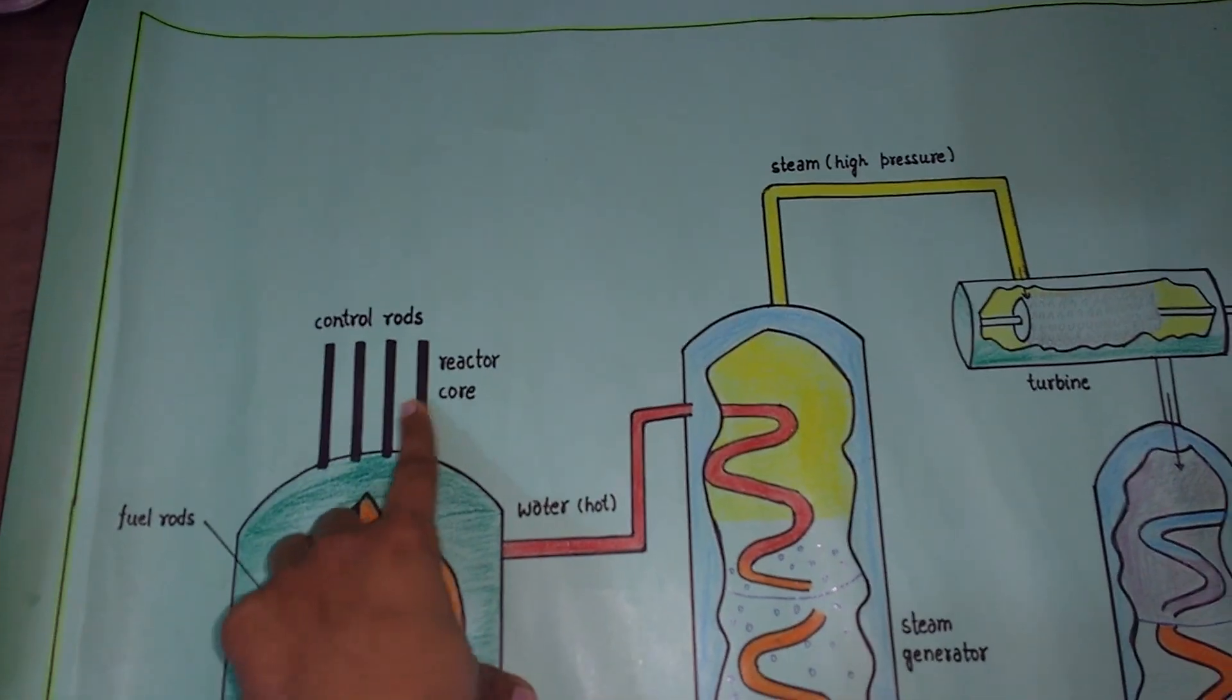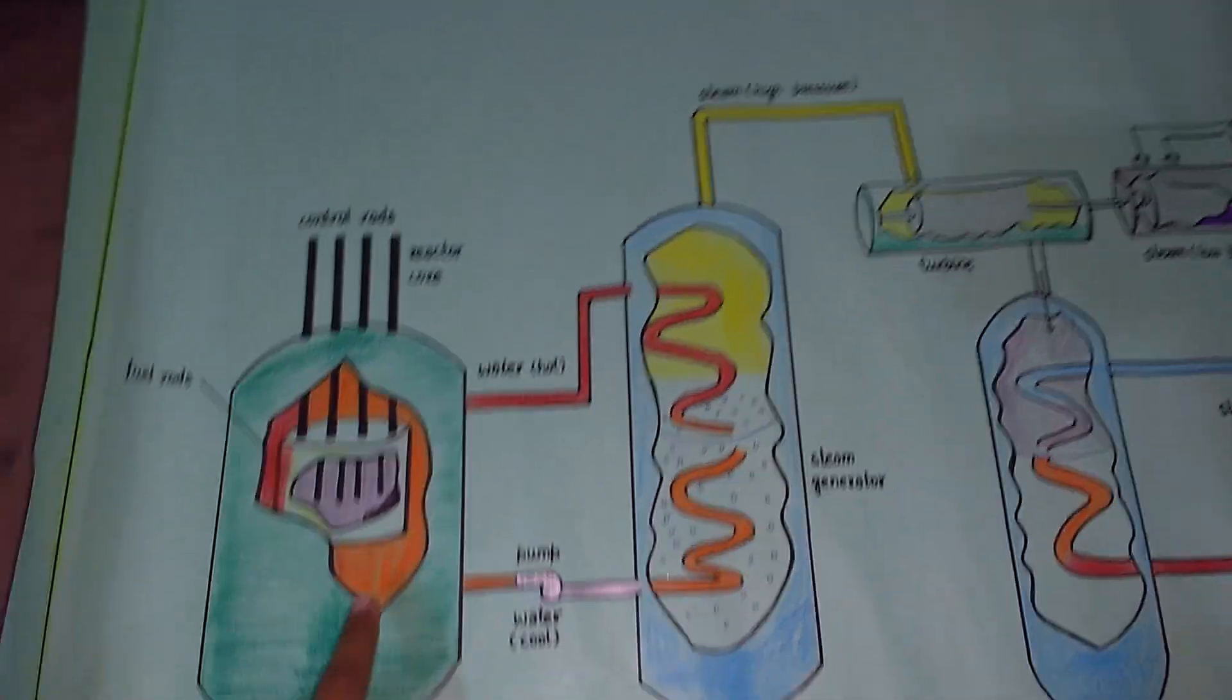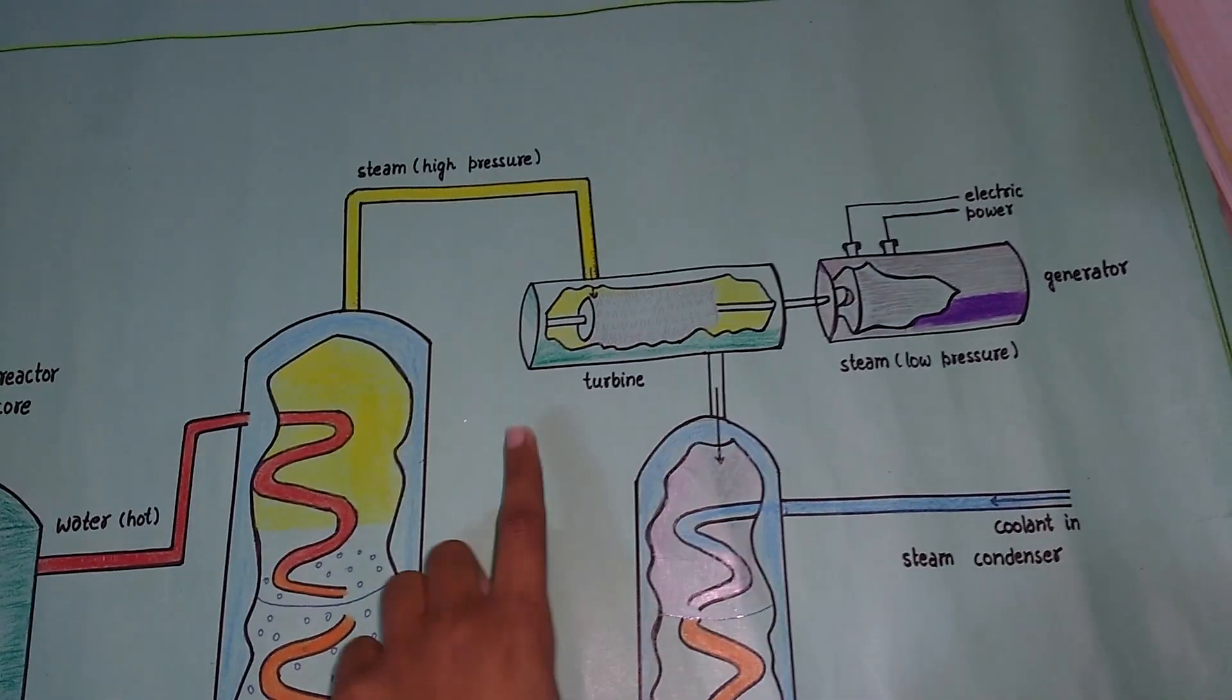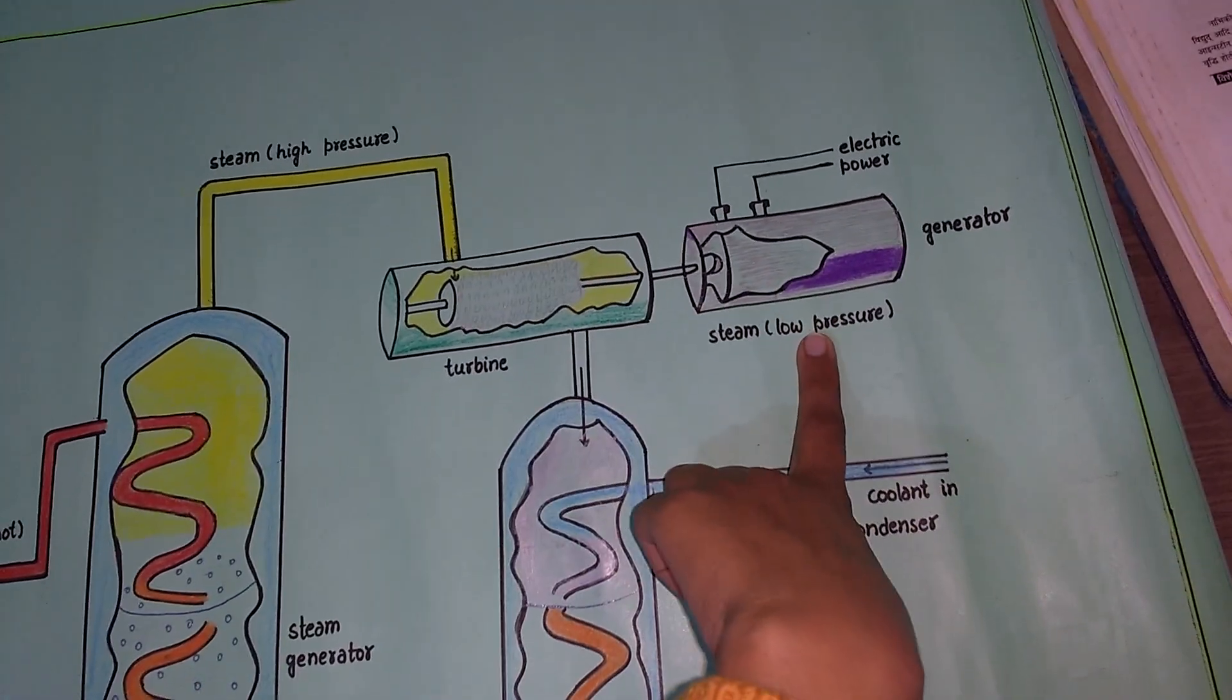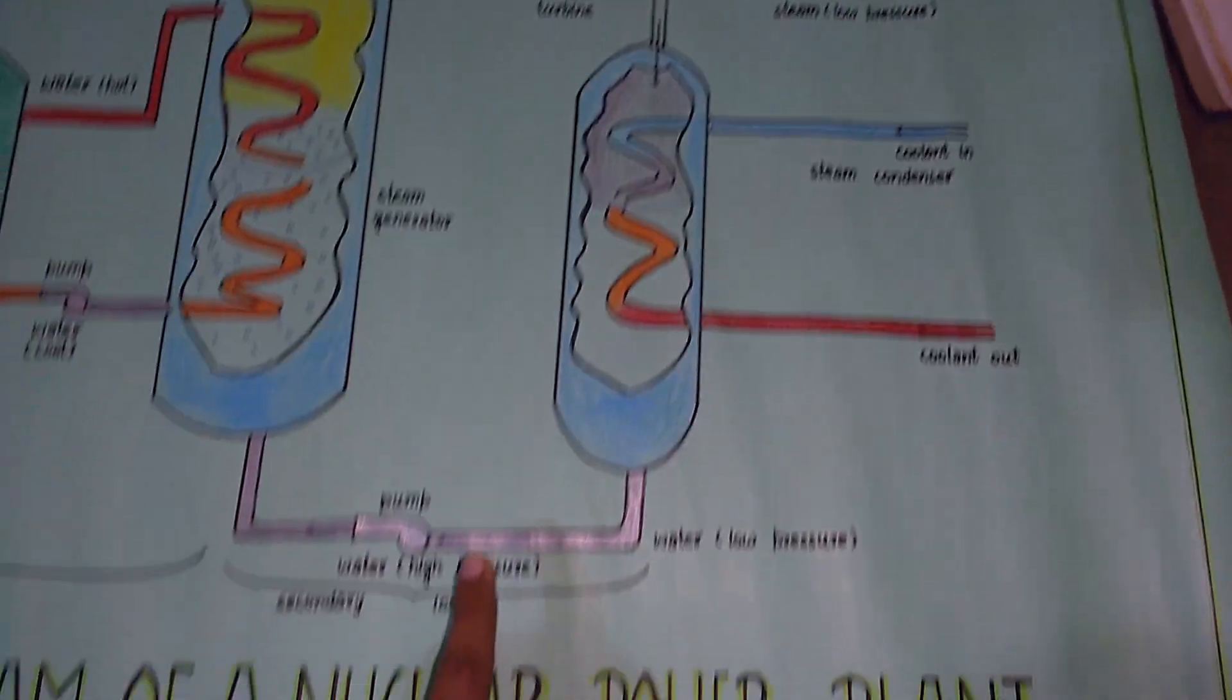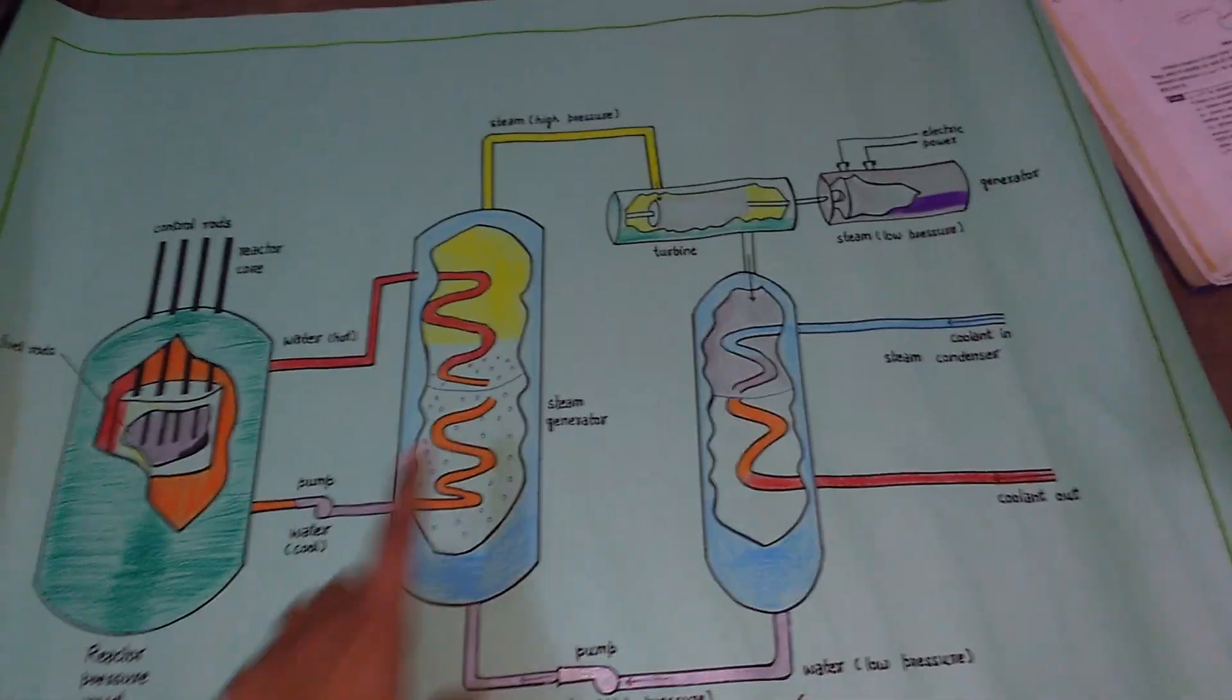This is control rods in reactor cores. These are fuel rods and some important parts of the nuclear power reactors like turbine, generator, and steam generator. So let's know first what is a nuclear reactor?